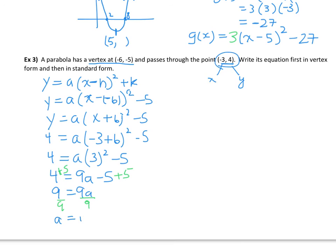So in vertex form, my equation would be y equals, I don't have to write the 1 in there, I mean we can if you want, but we wouldn't normally see that written in there, the convention is just to leave it off.